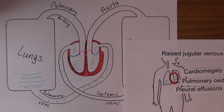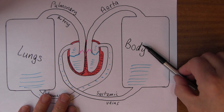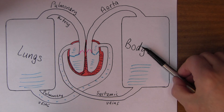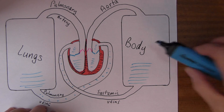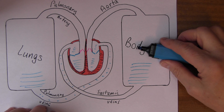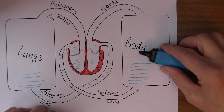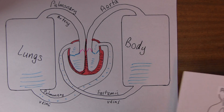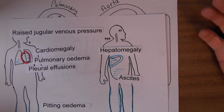The same is true of hepatomegaly. The liver is part of the body just as the gastrointestinal tract and mesenteric blood supply are. The liver becomes very congested with blood — it can't drain properly. The backlog of pressure in the systemic veins increases the pressure in the veins draining the liver, which increases pressure in the liver capillaries, causing enlargement of the liver — the hepatomegaly. Over time this will damage the liver.